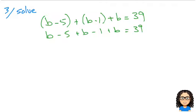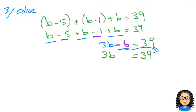Combining like terms: b + b + b gives me 3b. Then minus 5 minus 1 is minus 6, equals 39. Now I want to put all the numbers on one side. I'll leave 3b where it is and move the minus 6 to the other side, where it becomes plus 6. So 3b = 39 + 6, which is 45.